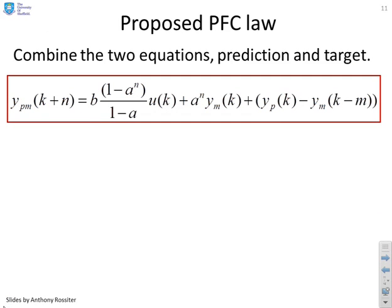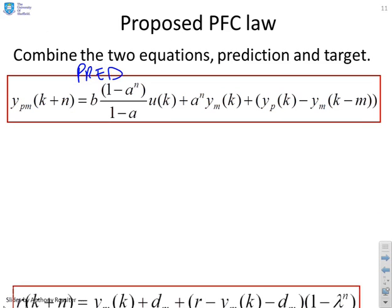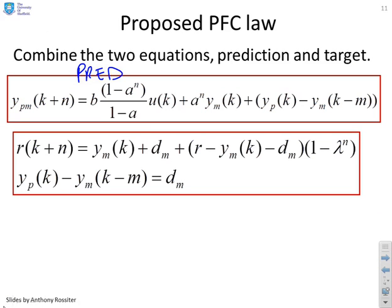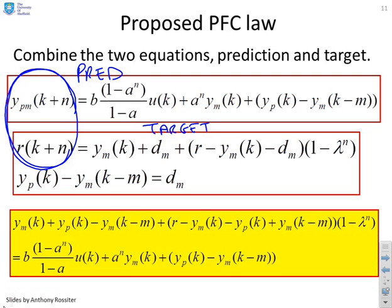So now we can combine these two equations for prediction and target. So you can see this one is the prediction equation, this one is the target equation, and all we're going to do, as ever before, is make those two terms the same. So when you do that, it does come out to be quite a long expression. But if you just remember that the conceptual steps are very simple, you're just writing here's the expression for my prediction, here's the expression for the target, make the two the same.